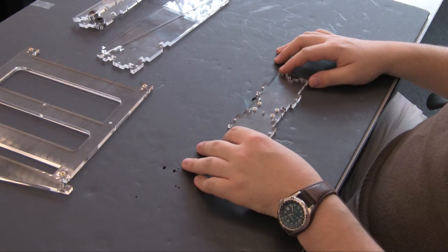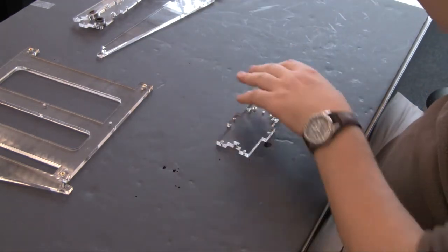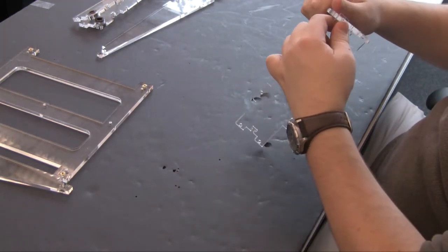Next, we will begin with the assembly of the Z-table. Take one of the side plates and attach it to the back plate.